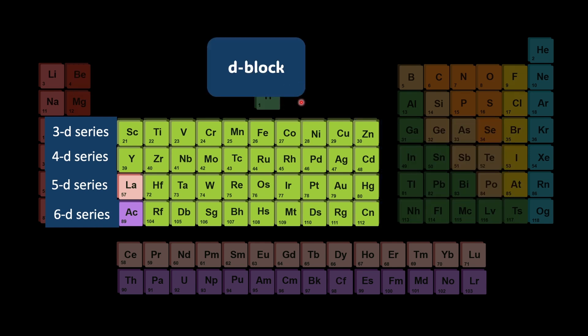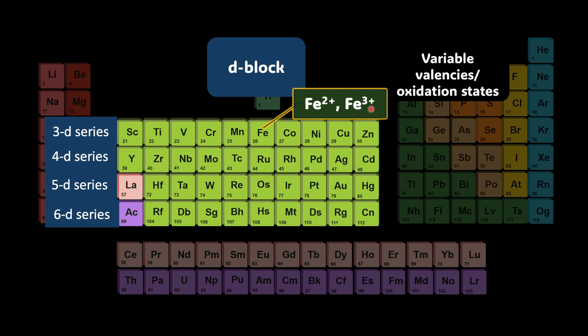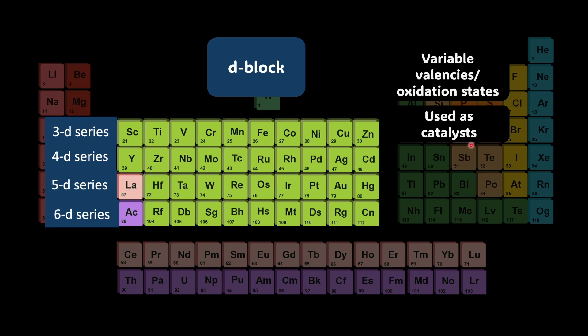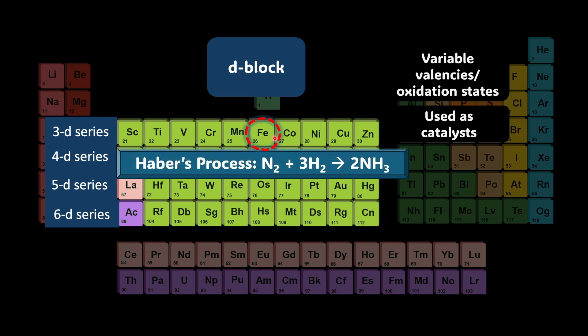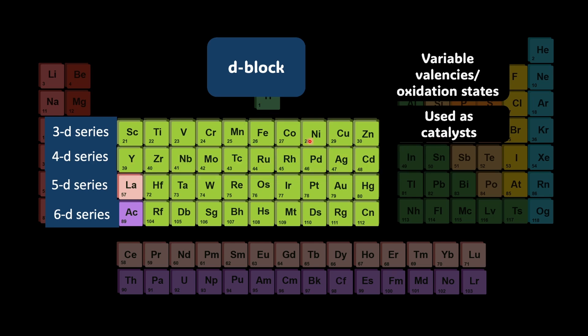Let's talk about the properties of D block elements. One of the most important characteristics is they show variable oxidation states. The same element can lose different number of electrons in different compounds leading to ions with different charges. For example iron 2+ and iron 3+ both exist. Most of these elements act as catalysts. Catalysts are substances that speed up a chemical reaction without being consumed in the process. For example iron is used in Haber's process to make ammonia.